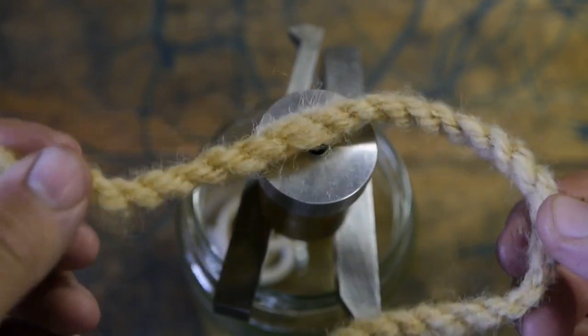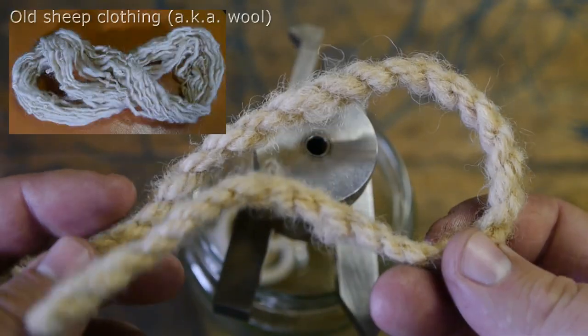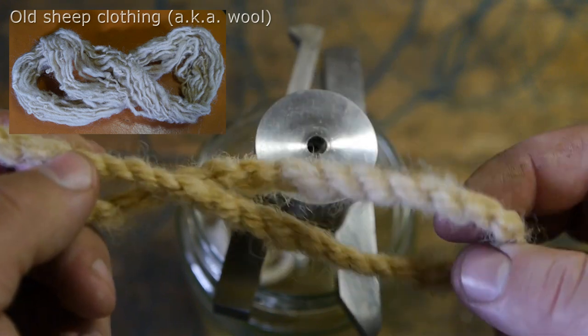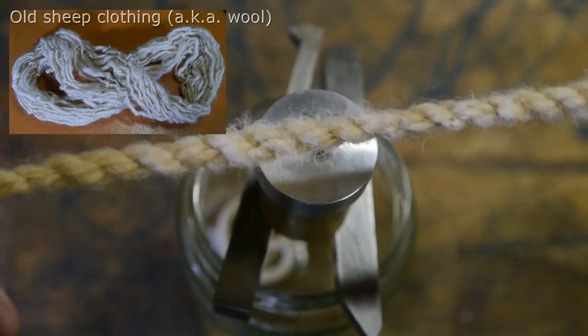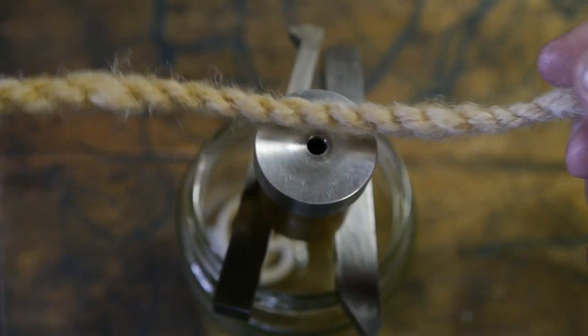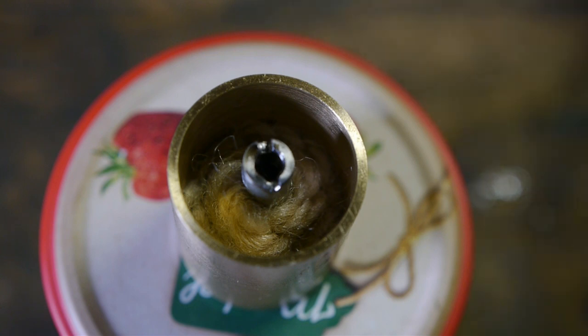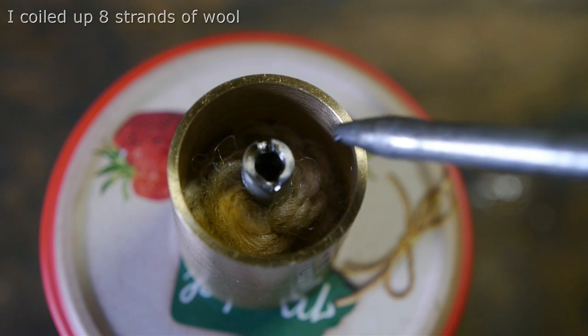New plan. I'm going to install this homespun piece of yarn. Hopefully I can get it through the hole. It is pretty thick. Well I got it in. But I must say that's a lot of wick. Let's add some oil.